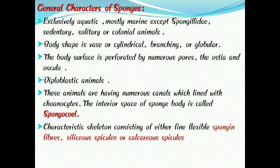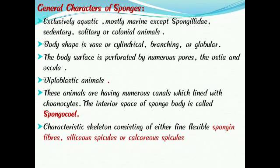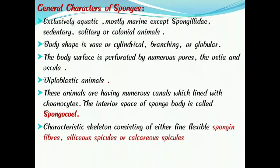These animals have numerous canals lined with choanocytes. In Porifera, the body is lined with numerous cells called choanocytes. The central cavity or interior space of the sponge body is called the spongocoel, which is permeated by numerous canals and lined with choanocyte cells.